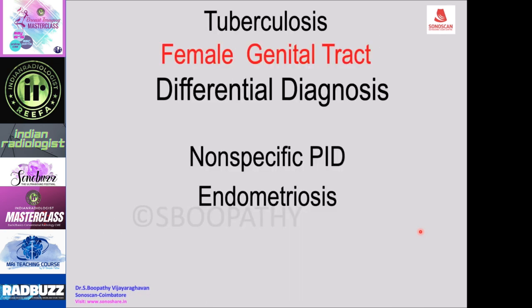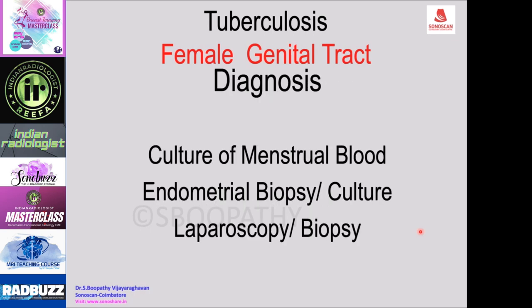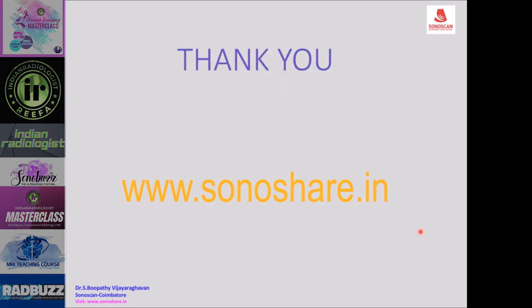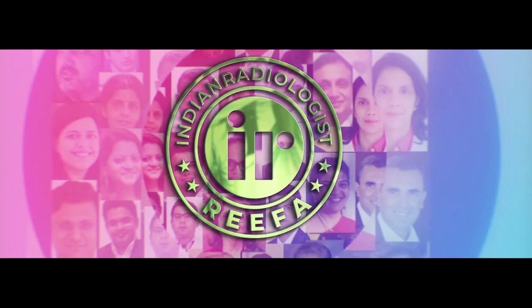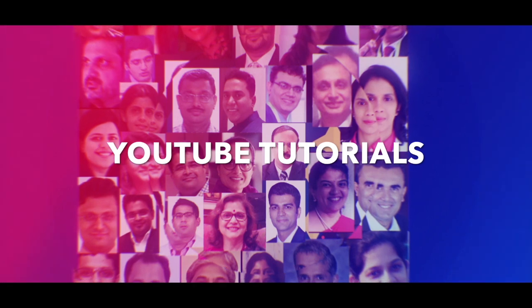The differential diagnosis of female genital tuberculosis includes non-specific pelvic inflammatory disease and endometriosis. Diagnosis is achieved by culture of menstrual blood, endometrial biopsy, culture for tuberculosis, and laparoscopy with biopsy.